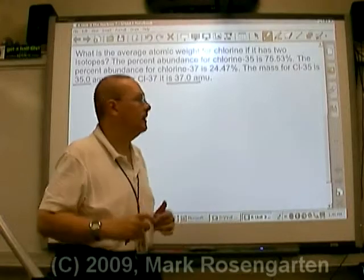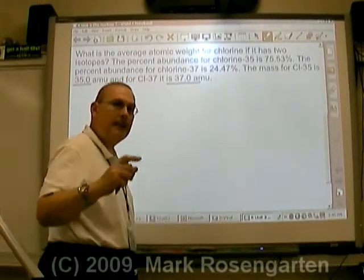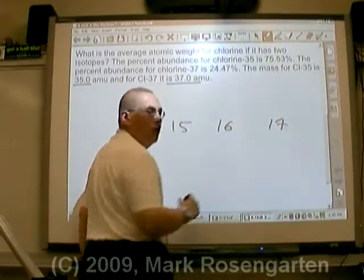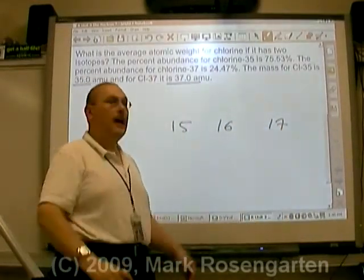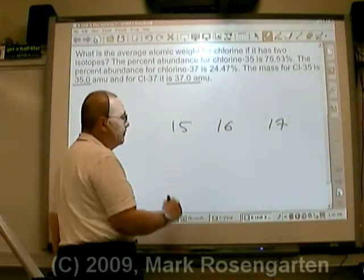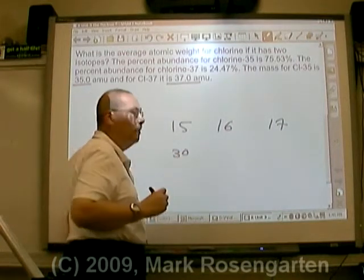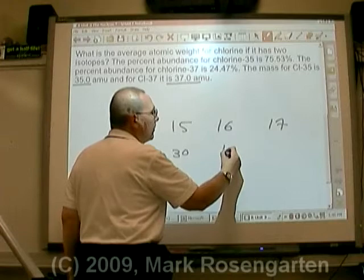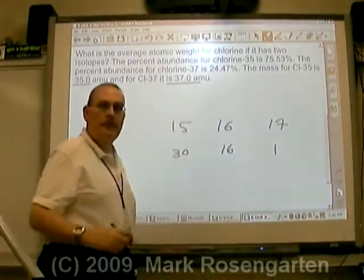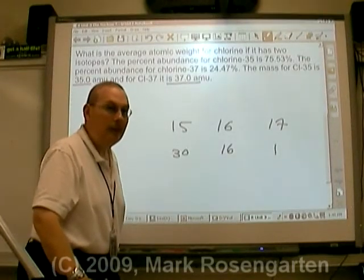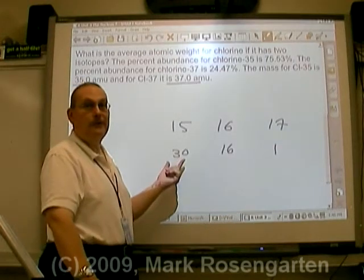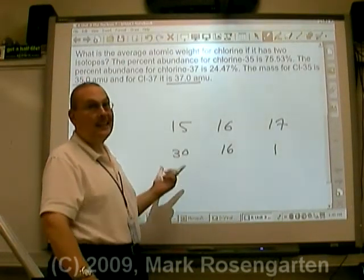A better way of looking at it is like this. Let's say you're going to go to a birthday party, and at that birthday party you're going to have 15-year-olds, 16-year-olds, and 17-year-olds. Now, you might say the average age is 16. But what if out of all the people, 30 of the people are 15, 16 of the people are 16, and there's only one 17-year-old at the party? How would you find out what the average age is? You're going to notice it's going to be a lot closer to 15, because there's a lot more people who are 15 at that party.